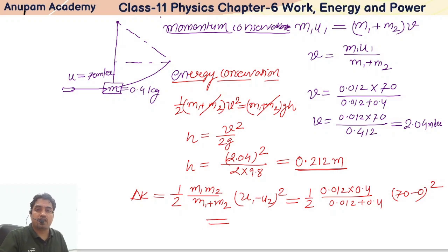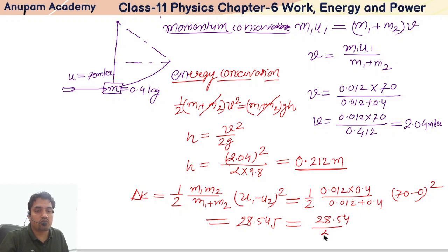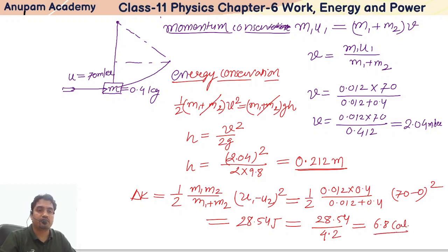Solving this, the answer is 28.54 Joules. To convert to calories: 28.54 / 4.2 = 6.8 calories. That is the amount of heat produced. Thank you.